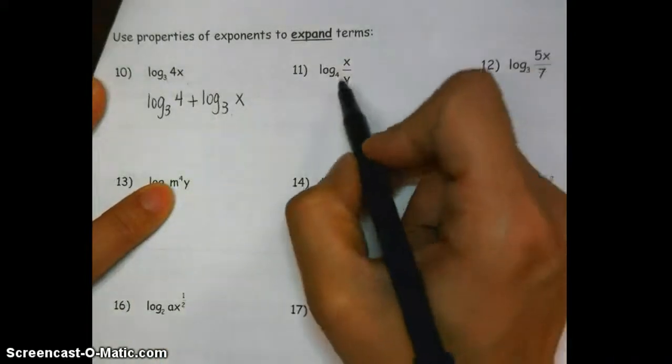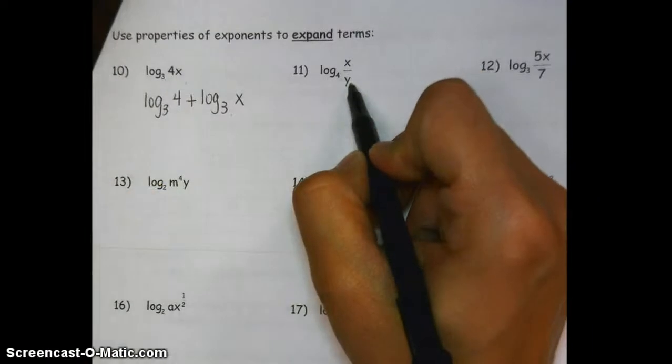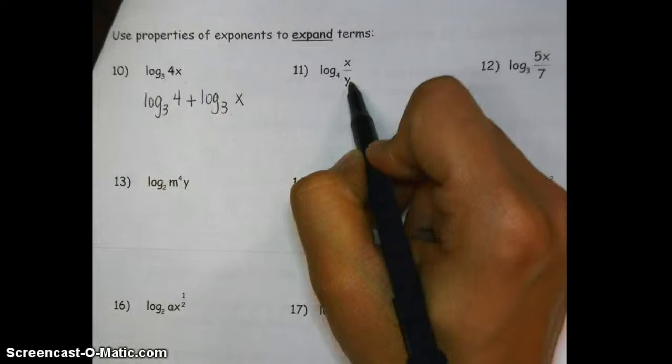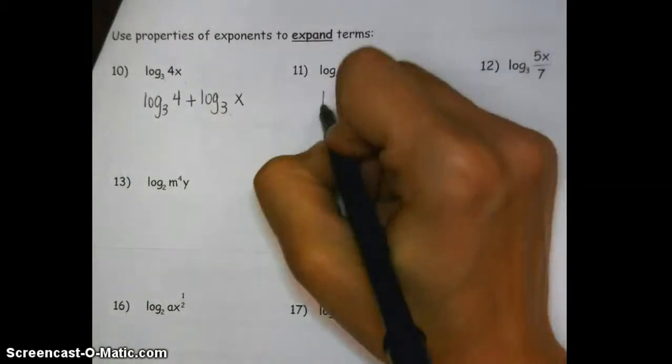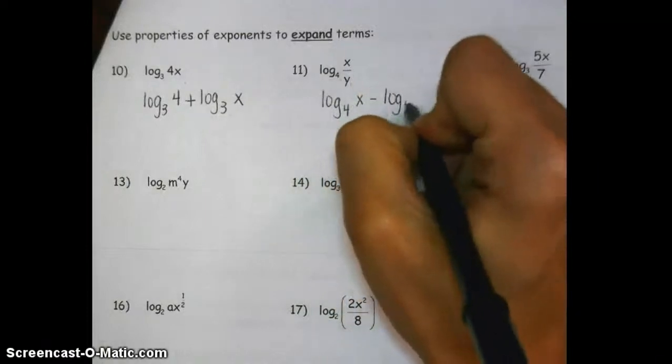All right, on the next one we got log base 4 of x divided by y. And we'll remember that if my arguments are a quotient, that means if I expand it they were being subtracted. So log base 4 of x minus log base 4 of y.